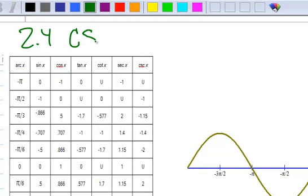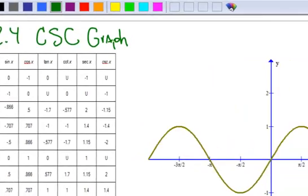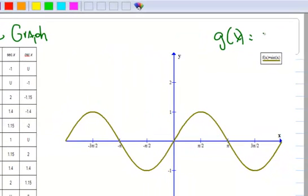And this is the cosecant graph. So its guide function is the sine, and I forgot what color we picked.